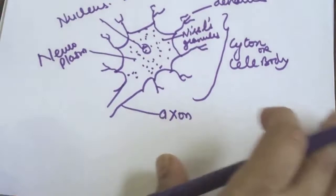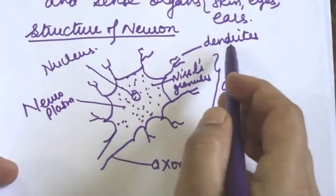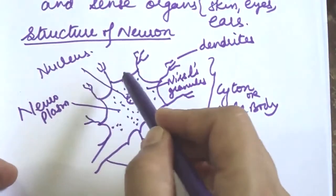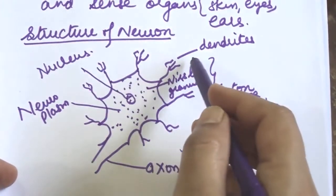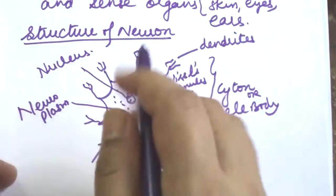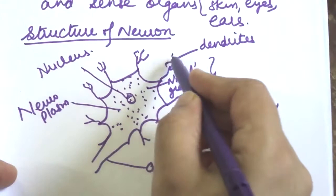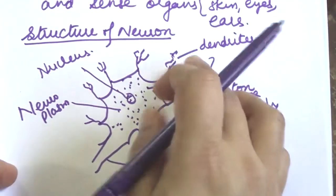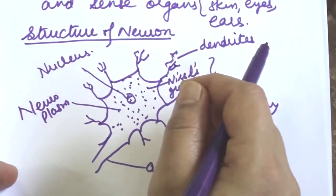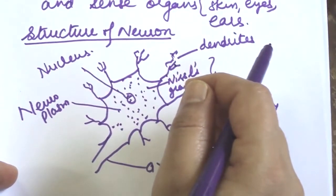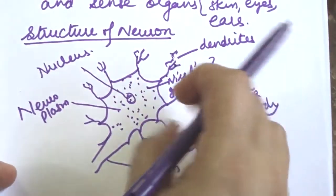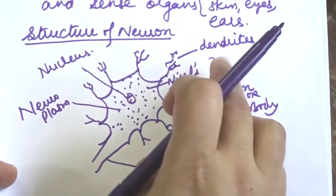Next we have dendrites or dendrons. These are short but highly branched, tapering projections which arise from the cytone. From the cytone, these dendrons further branch into dendrites. Dendrites also possess neurofibrils and Nissl granules, and they provide a large surface area for synapse.